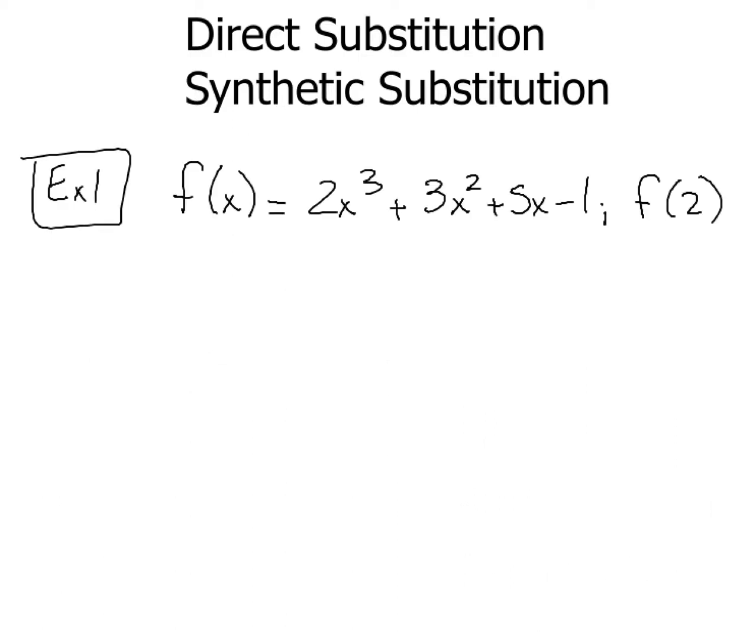Let's just do two examples. First one, we're going to have f(x) = 2x³ + 3x² + 5x - 1 and we're being told to evaluate that for f(2). Some textbooks will write that as f(2) the way I have written here. Others might write it like this. They might put x = 2 like that.